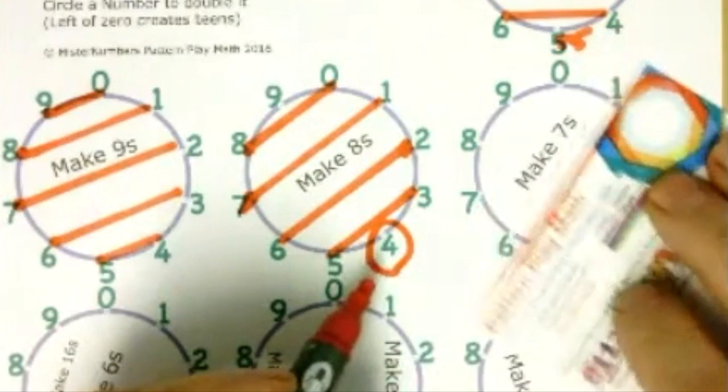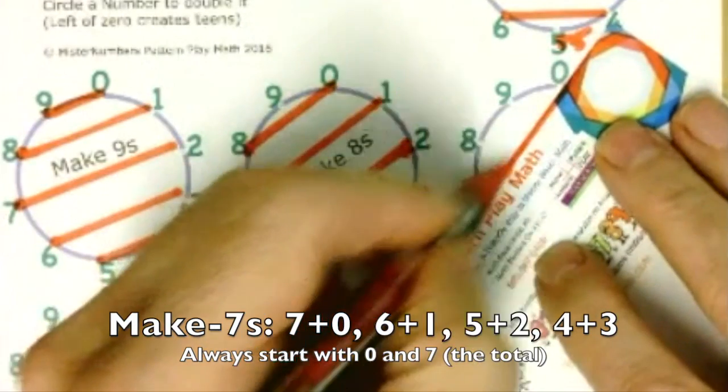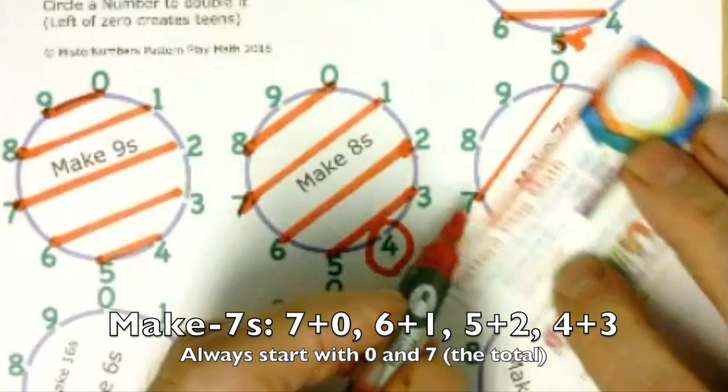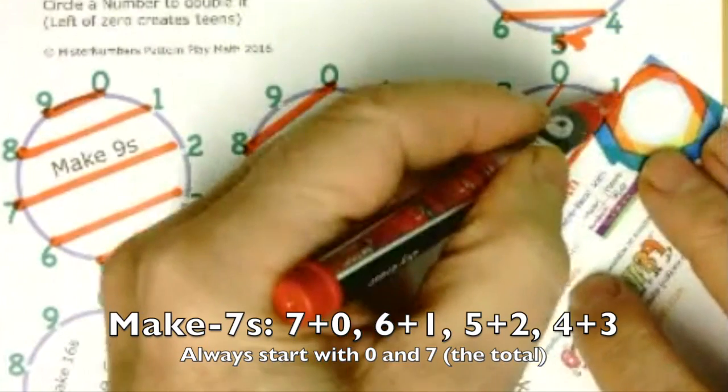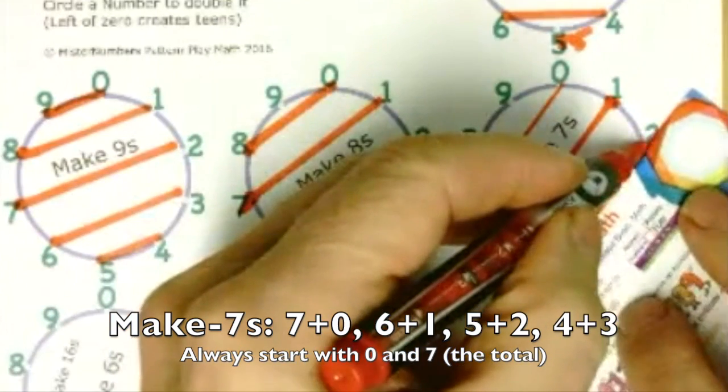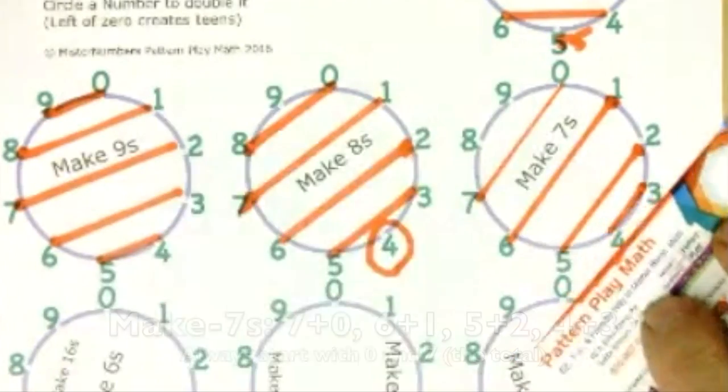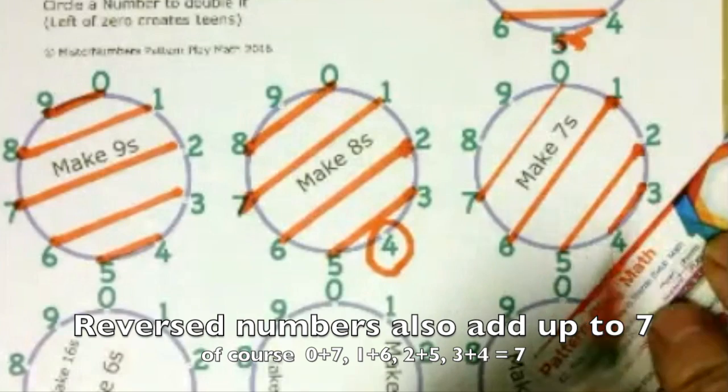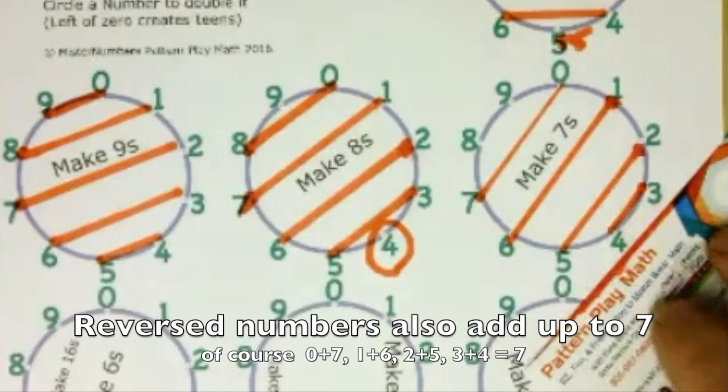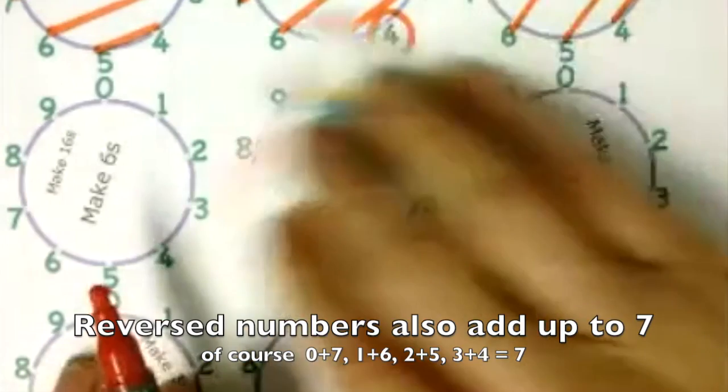So now let's do make 7s. We'll just go through this pretty quickly. 0 and 7 make 7. So here we are. 1 and 6 make 7, 2 and 5 make 7, and 3 and 4 make 7. And of course, you can go around 4 and 3, 5 and 2, 6 and 1, and 7 and 0 all make 7.